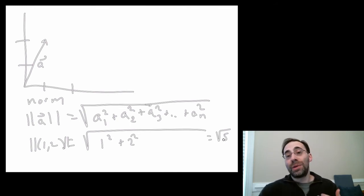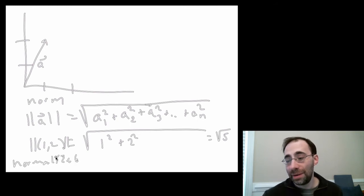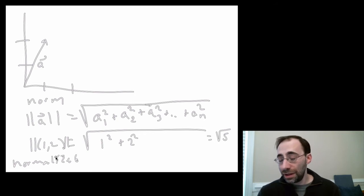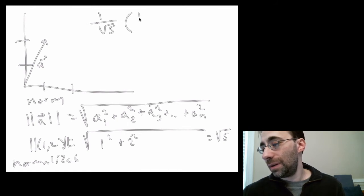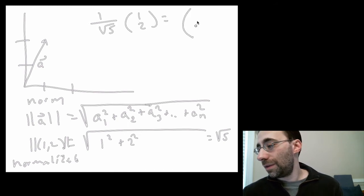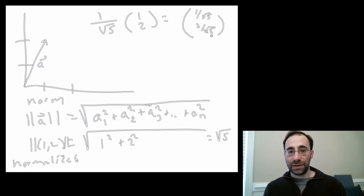If a vector is normalized, it is divided by its norm. So the normalized version of (1, 2) would be (1/√5)×(1, 2) = (1/√5, 2/√5). We do that so the length of a normalized vector is 1, which is the definition of a normalized vector.